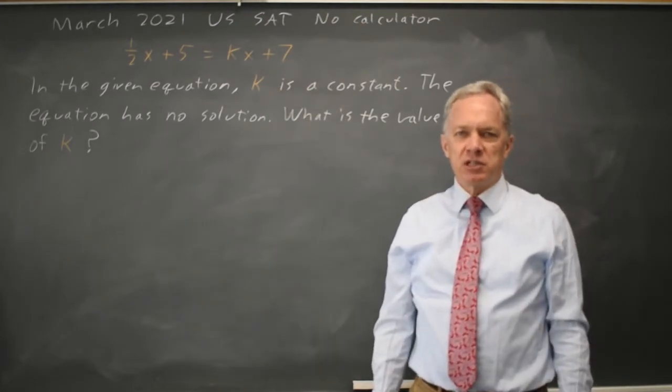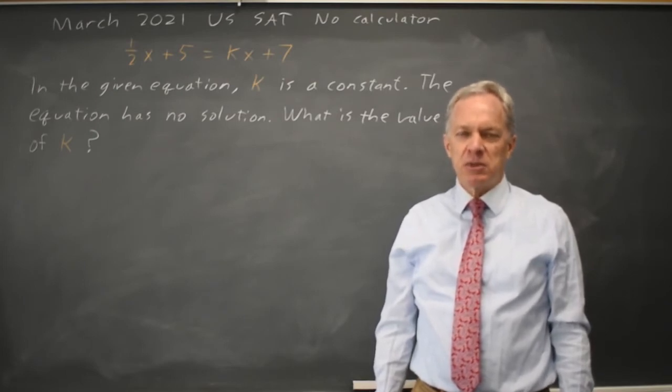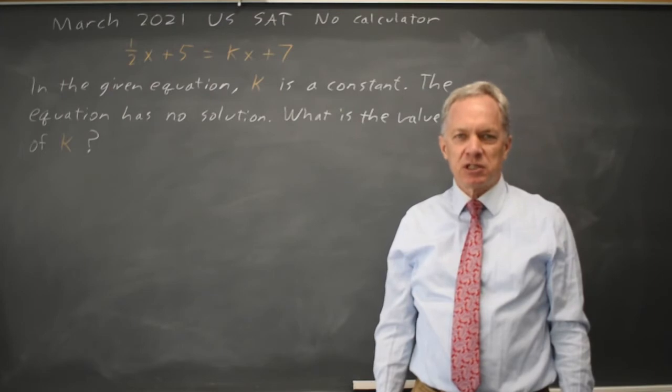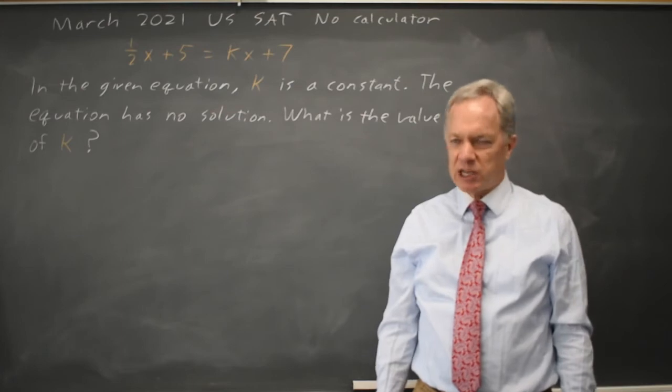For linear equations or systems of equations, there is no solution when the slopes are the same and the intercepts are different. There are infinitely many solutions when the slopes are the same and the intercepts are also the same.